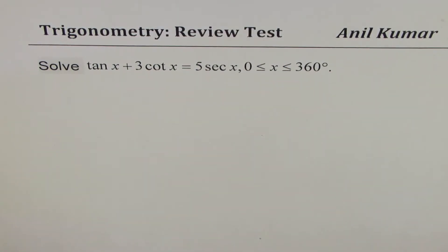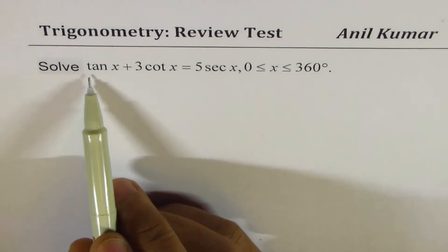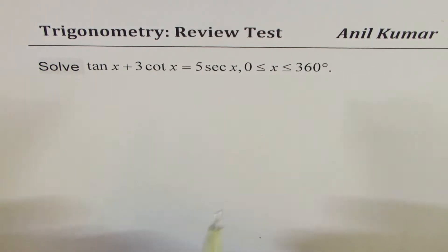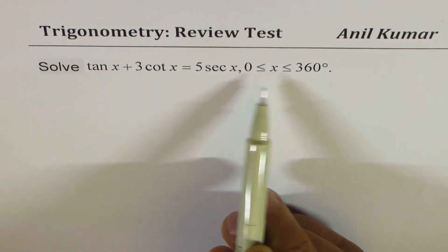I'm Anil Kumar, sharing with you a test question on trigonometric equations. The equation here to solve is tan x plus 3 cotangent x equals 5 sec x, where x is between 0 to 360 degrees.